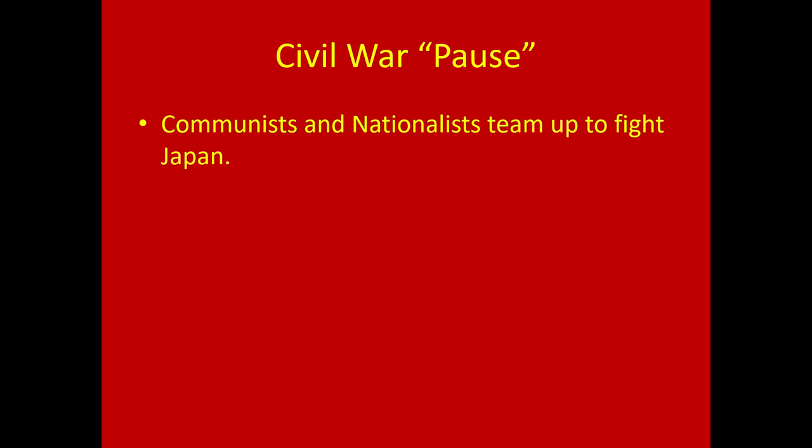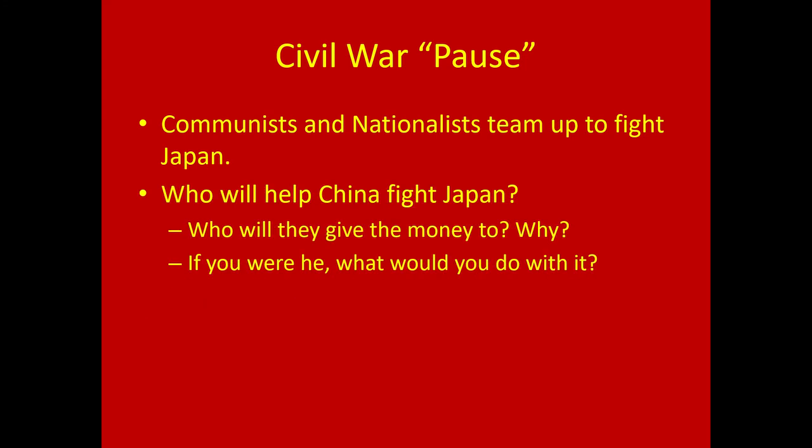Who helps China fight Japan? The countries that see Japan as a threat. As Japan expands its empire into territories claimed by colonial empires — like French Indochina — European powers shift to supporting China. The United States also takes China's side: China has more resources, is less of a rival, and has more customers. The aid money and guns go to the nationalist government, which is still technically in charge since the communists were the underdogs trying to topple them.